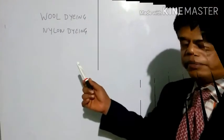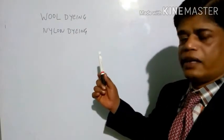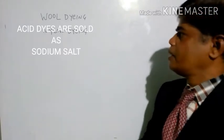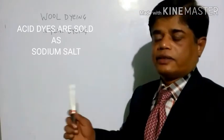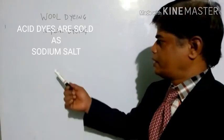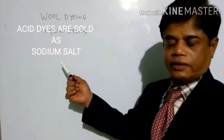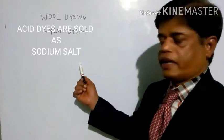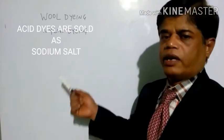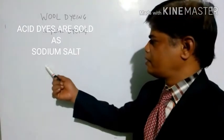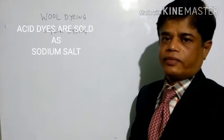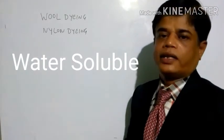Acid dyes are basically a type of salt. In the market, acid dyes are sold as a salt form and are soluble in water.